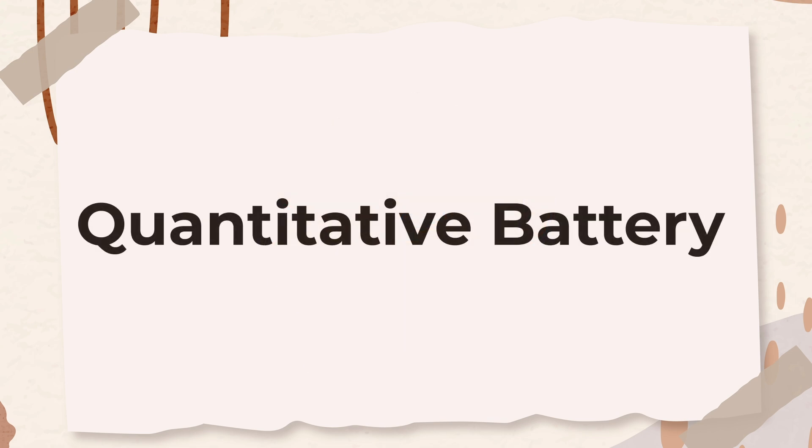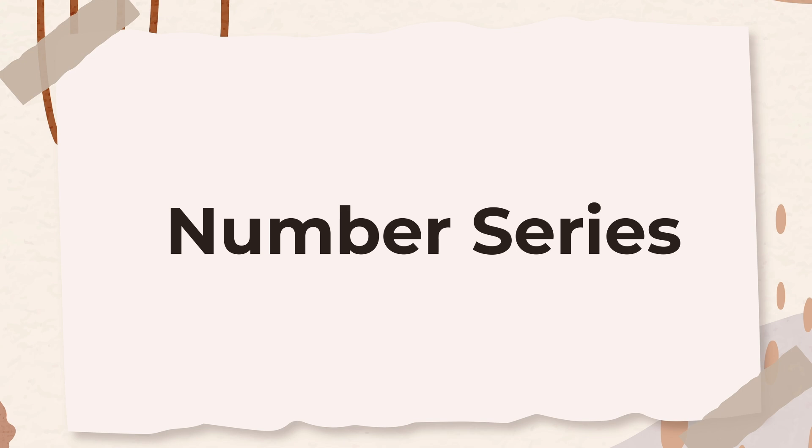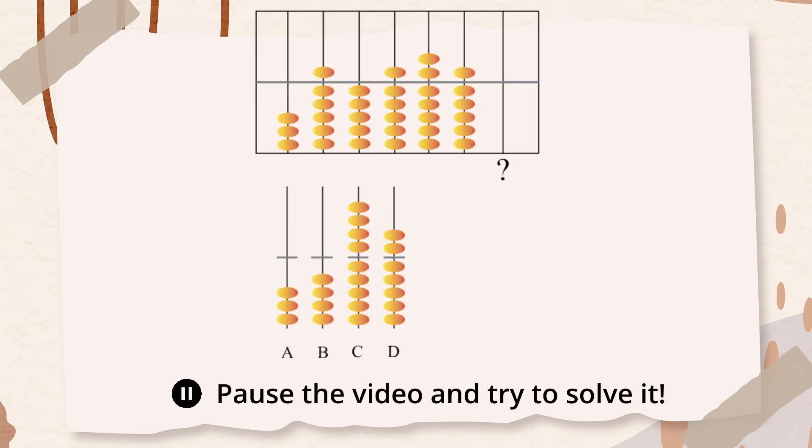All right, let's move on to the next battery of the test, the quantitative battery. The next subtest in this battery is called number series. This question shows a series of images of beads on an abacus toy. You have to figure out the rule used to arrange the number of beads, then decide how many beads should come next in the series.